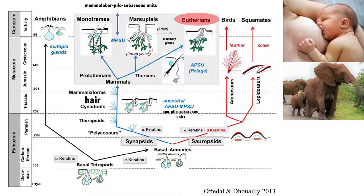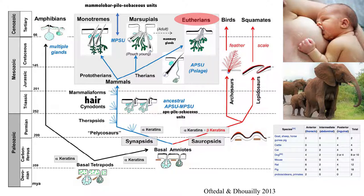This is interesting — you can keep track of all the nipple distributions across mammals. Dogs don't have nipples in the chest; they have them in the groin. You can find on Wikipedia where the nipples are: they're either thoracic nipples, abdominal nipples, or inguinal — near the groin — nipples. The proboscideans, that's the elephants, and the primates have two thoracic nipples and none elsewhere. But pigs have six in the chest, six in the stomach, and six in the groin — 18 altogether. That's a lot of nipples.